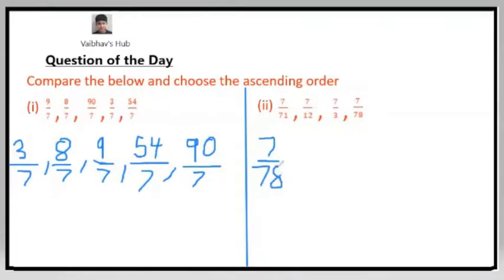Then after 7 by 78, we will have 7 by 71. After that, we will have 7 by 12, and then at last we will have 7 by 3. So that means the ascending order of the second one will be 7 by 78, then 7 by 71, and then 7 by 12.